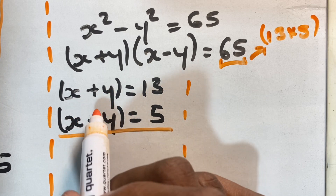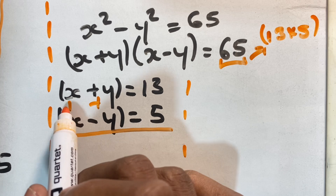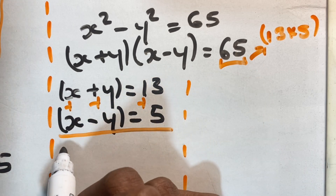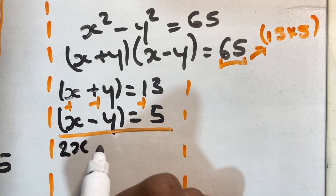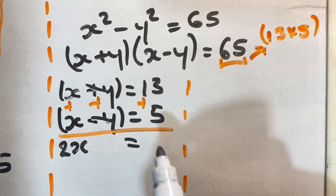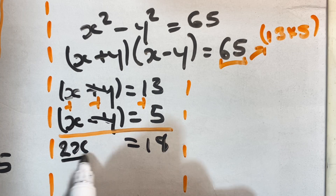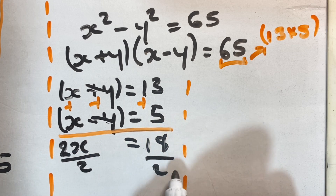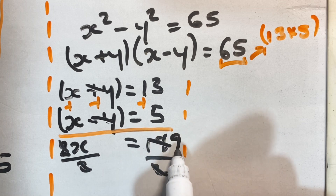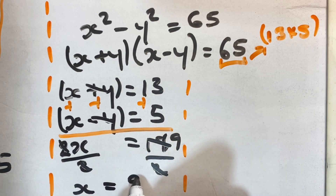So we are going to solve this pair of simultaneous equations using the elimination method, eliminating y. Since one y is positive and one is negative, we add through to eliminate y. The y terms cancel out, x plus x gives 2x, and 13 plus 5 is 18. Dividing both sides by 2, we get x is equal to 9.